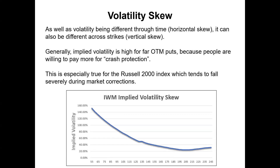As well as volatility being different through time — called horizontal skew — it can also be different across strikes, which is called vertical skew. Generally, implied volatility is high for far out-of-the-money puts because people are willing to pay more for crash protection. This is especially true for the Russell 2000 index, which tends to fall severely during market corrections. Here with IWM, the Russell 2000 ETF trading around 195 at the time, you can see that as we go down in strikes to puts that are really far out of the money, the implied volatility gets really, really high. The further out in the strikes we go, the higher the volatility people are willing to pay for that crash protection.